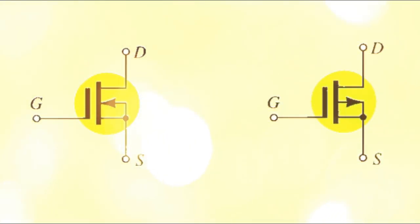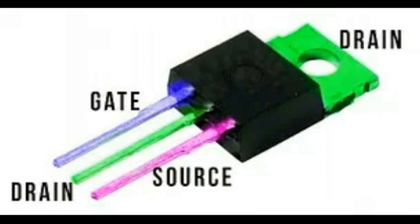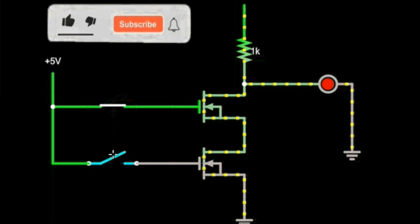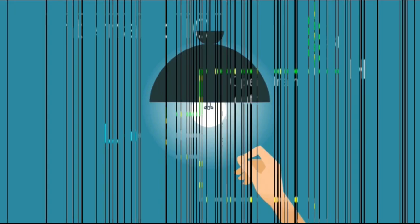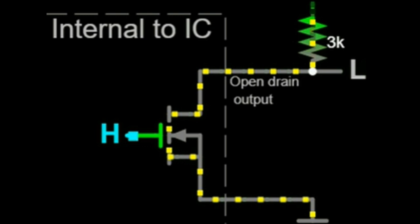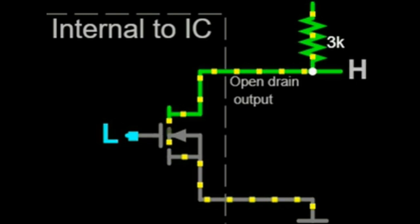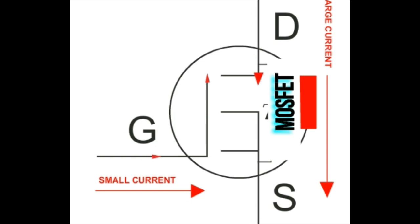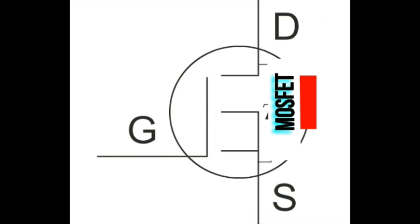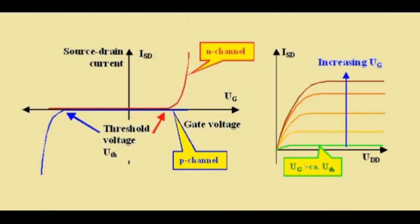The MOSFET transistor is equipped with three terminals: source, gate, and drain. By applying voltage to the gate, the electric current between the drain and source can be controlled. Just as pressing a key in your room connects the electrical circuit and allows current to reach the lamp, the voltage applied to the gate does the same thing in the MOSFET. Connecting the gate to the voltage source causes the resistance between the drain and the source to decrease drastically, creating a channel for current flow. When no voltage is applied to the gate, the drain-to-source resistance increases sharply and the current path is lost.